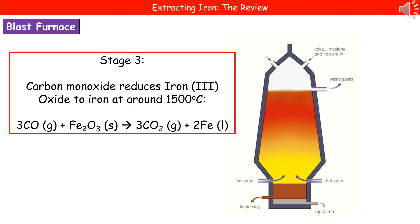You've got the balanced symbol equation there showing you that we start off with our carbon monoxide, we add that to our iron oxide, Fe2O3, and then we're going to make carbon dioxide and our liquid iron.